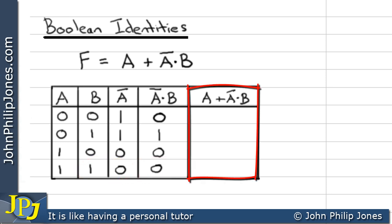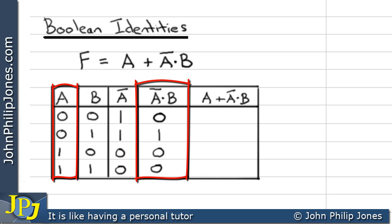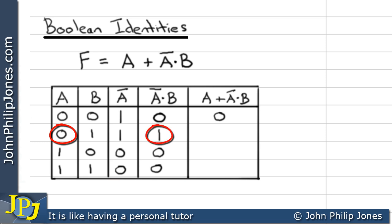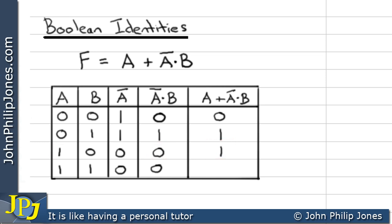Now the last column looks at the A column and the NOT A AND B column, OR-ing them together. When A is 0 and NOT A AND B is 0, OR-ing two 0s gives 0. When A is 0 and NOT A AND B is 1, 0 OR 1 gives 1. When A is 1 and NOT A AND B is 0, OR-ing gives 1. And finally, when A is 1 and NOT A AND B is 0, 1 OR 0 gives 1.